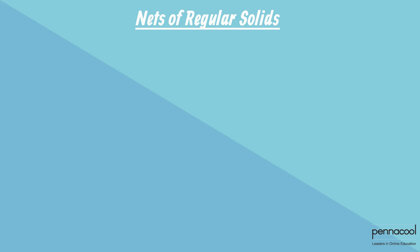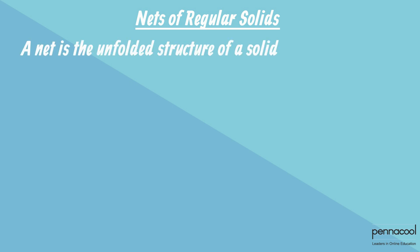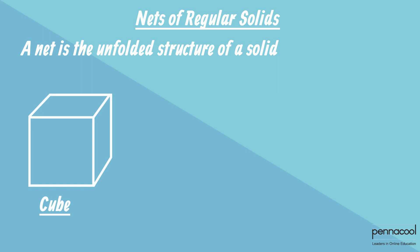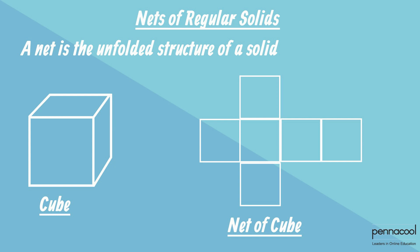Regular solids have something called nets. A net is the folded structure of a solid. It shows us the plane shape that makes up the surfaces of the solid. If we take a cube and unfold it, it would look like this.